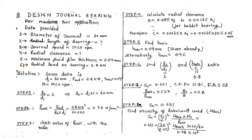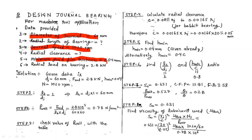Our objective is to design a hydrodynamic journal bearing with the given data. The diameter of the journal is 60 mm, the RPM is 1020, the minimum fluid film thickness h_min is 0.04 mm, and the radial load is 2.8 kilo Newton.